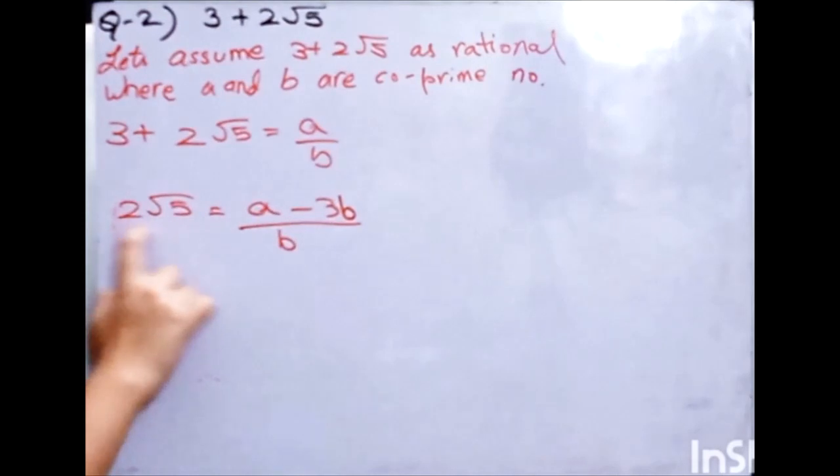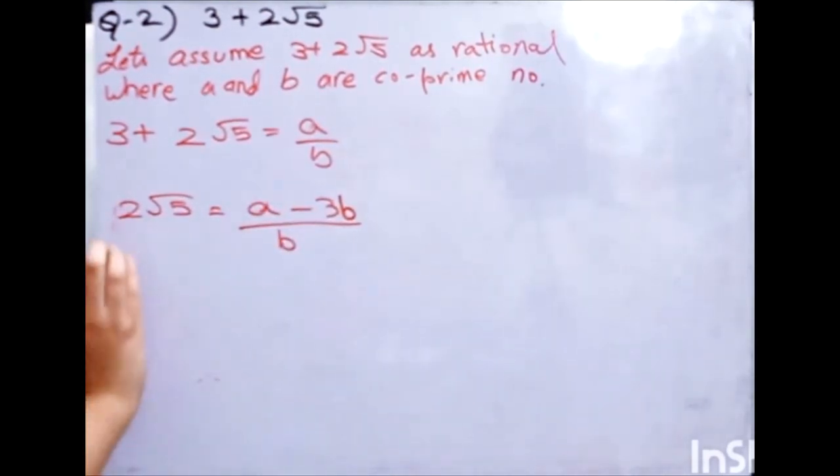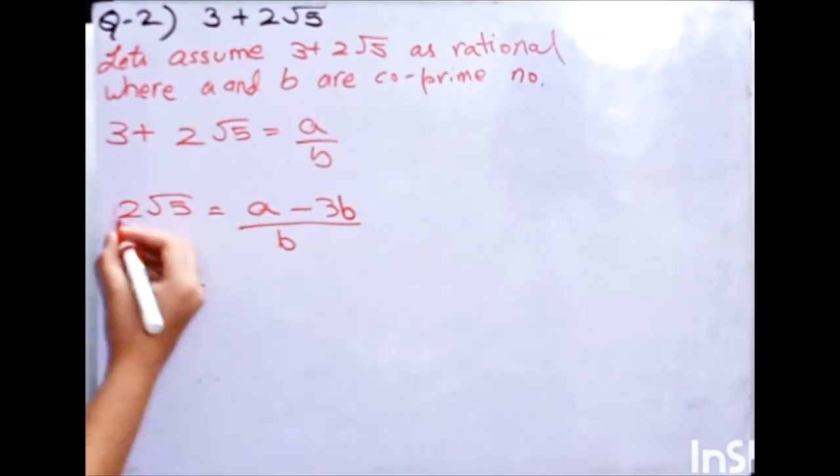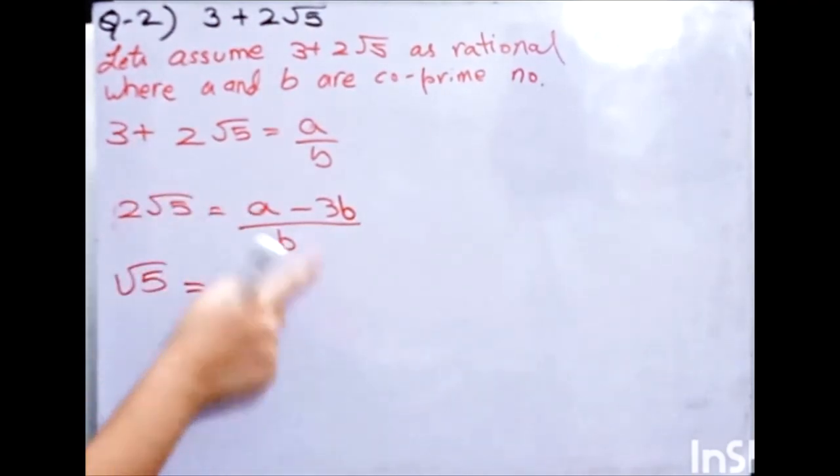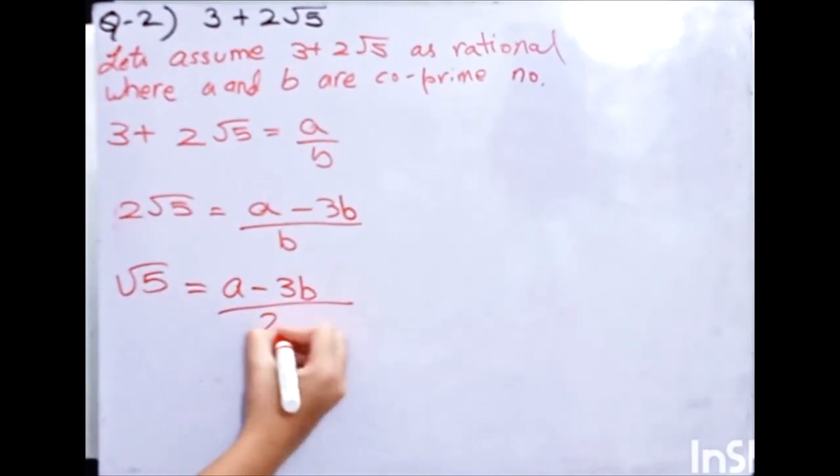Now, this is in multiplication. I will put this also to this side. I will put this to this side only. So my equation will be like root 5 equals to a minus 3b by 2b. This is the answer.